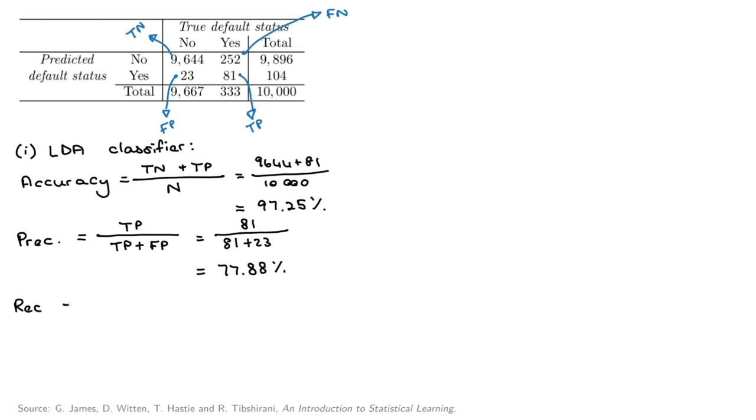Recall. So now what we're doing is we're looking at the points that are actually positive, and we're saying out of the points that are actually positive, how many of them did we classify as positive. So out of the points that are actually positive, there are 252 plus 81 points that are actually positive. Out of those 81 we classify as positive. So that's equal to 24.32 percent.